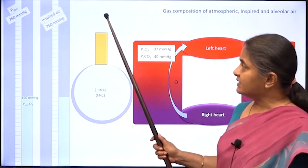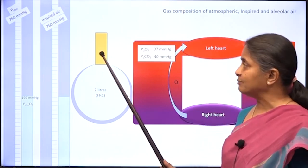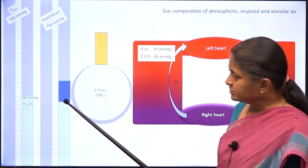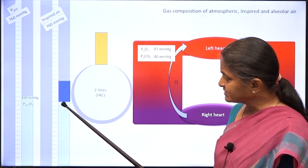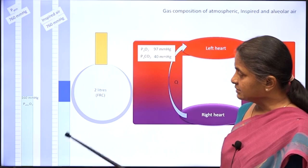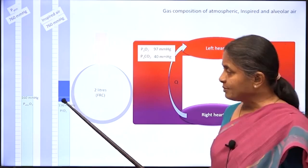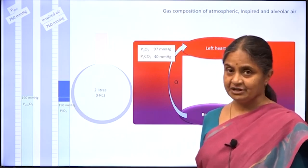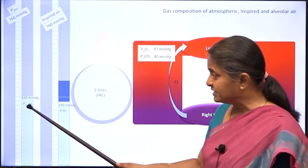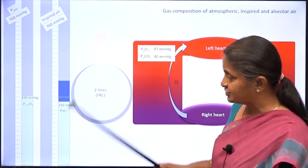When air is inspired through the trachea and bronchi, water vapor is added to air. You notice that water vapor occupies some oxygen space and some nitrogen space. Oxygen partial pressure therefore reduces to 150 mmHg. Water vapor pressure at saturation is 47 mmHg, and of that, 10 mmHg occupies the oxygen space, reducing it from 160 to 150. The rest occupies the nitrogen space.